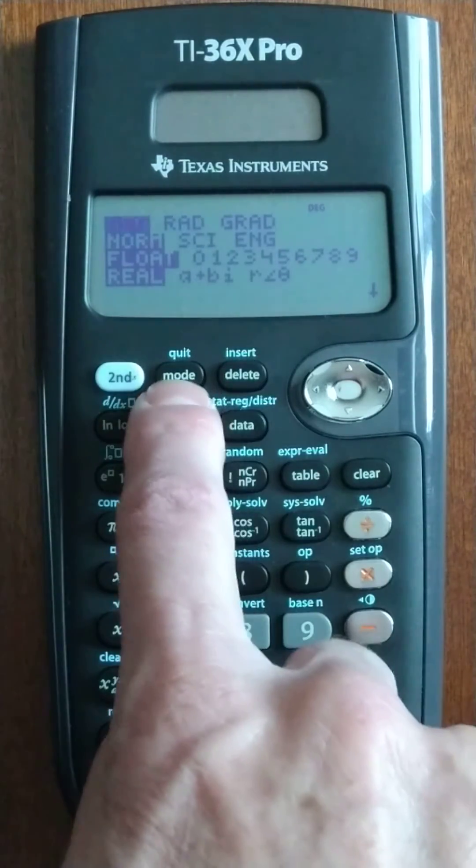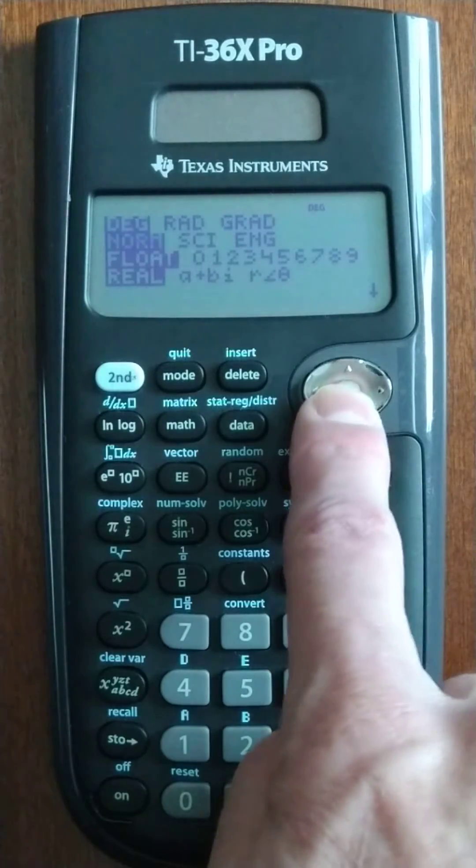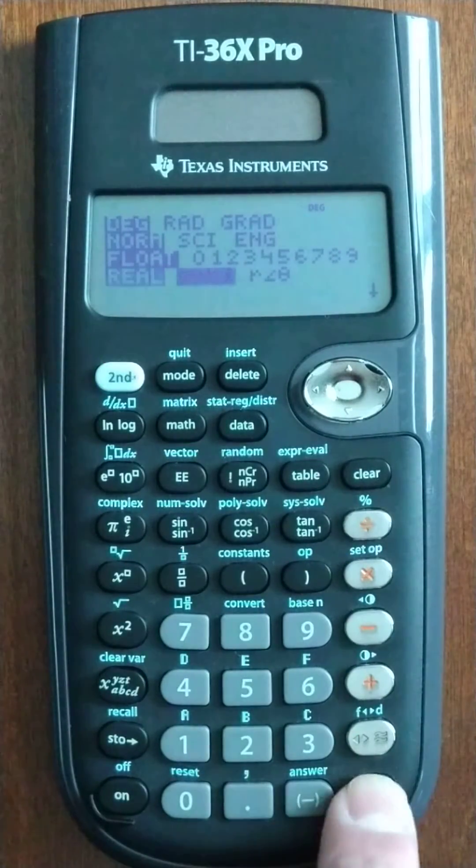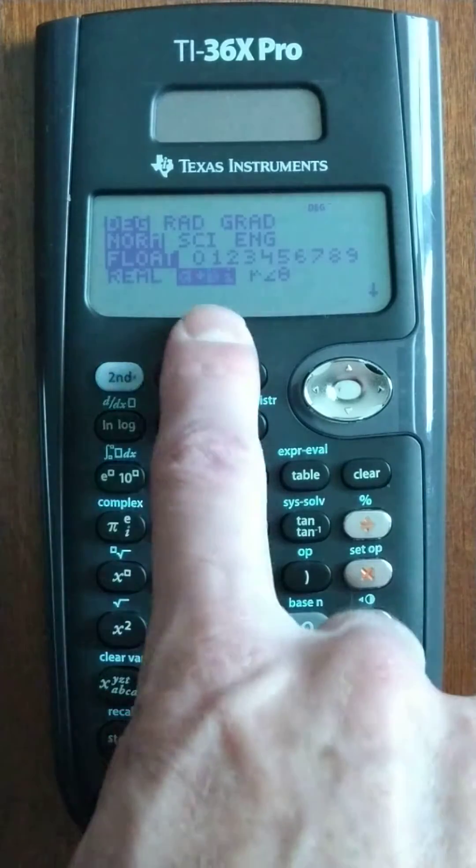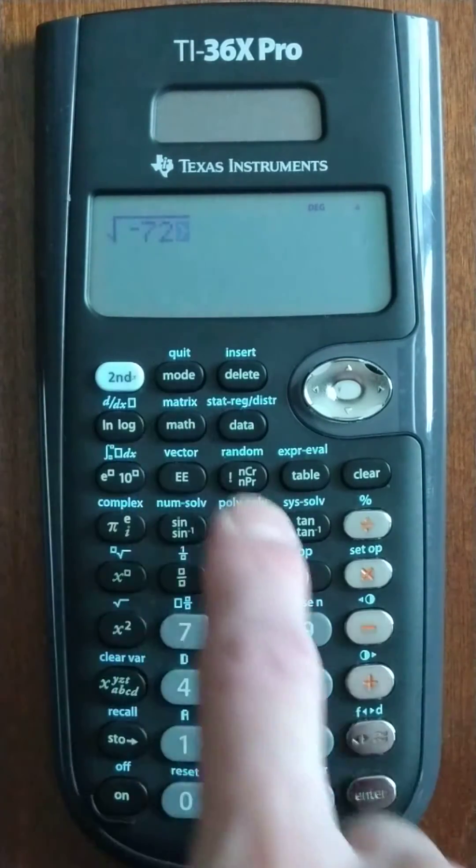We don't have to go to a different menu. We do have to change the mode to accept, right here, complex answers. And you can always just leave that on. I'm not sure why it doesn't default to it.